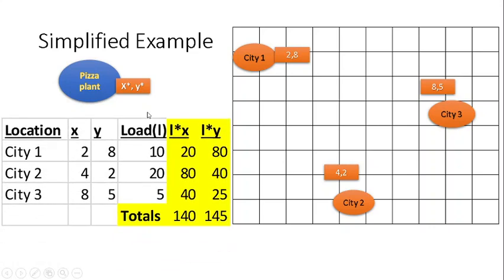So if we build a table like that with the cities, the X and Y coordinates in a separate column, the loads as before are 10, 20, and 5, then we start by multiplying the load times the X and the load times the Y coordinate. We calculate those numbers and we find their totals. As soon as we do this, we are ready to apply the formula as before.